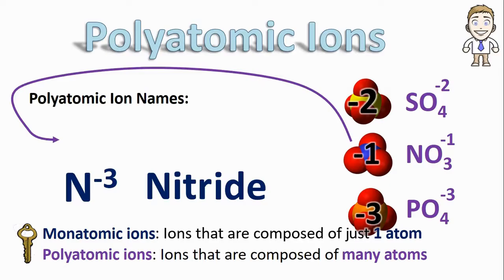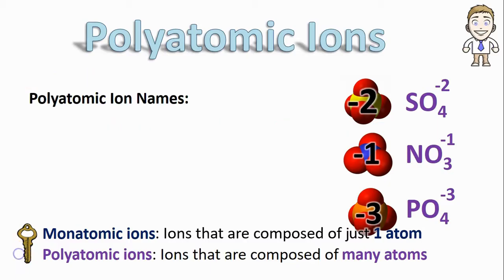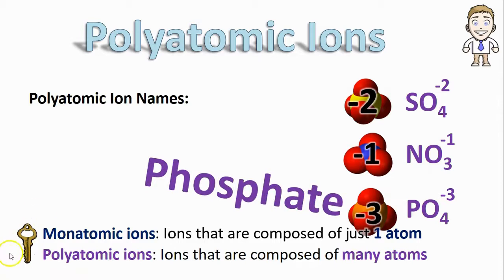If you take a polyatomic ion that also contains nitrogen, we would probably call it nitrate. And as you can probably now guess, our PO4 minus three would be called phosphate.